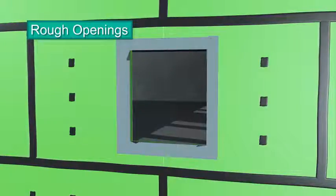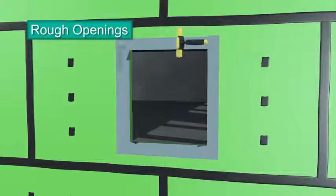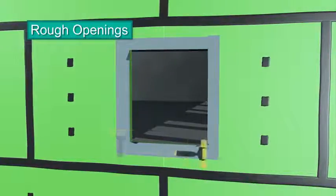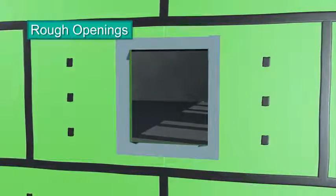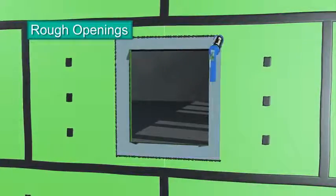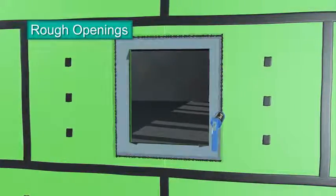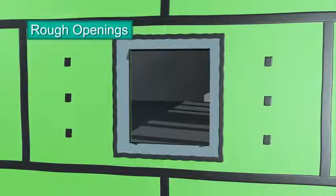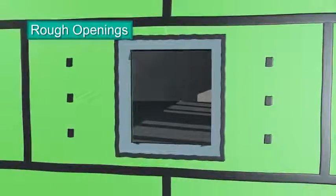Always install the ExoAir 111 material in this order to ensure proper shingling. Roll to smooth out any fish mouths or air pockets in the membrane. Apply a small detail amount of Dimonic 100 sealant to all seams and along the outer perimeter of the ExoAir 111 membrane.